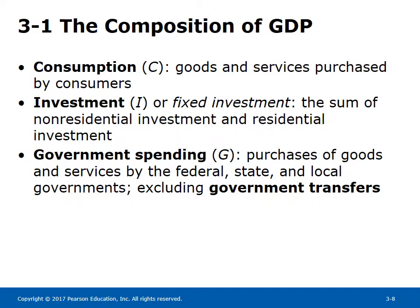The composition of GDP. Consumption C represents spending on final goods and services by consumers such as clothing, restaurant meals, and haircuts. Investment I represents fixed investment spending on non-residential and residential buildings and equipment such as a company building a factory or buying a machine. Government spending G represents purchases of goods and services by the federal, state, and local governments such as spending on roads, bridges, consultants, and teachers, excluding government transfers such as welfare payments and spending on Social Security.